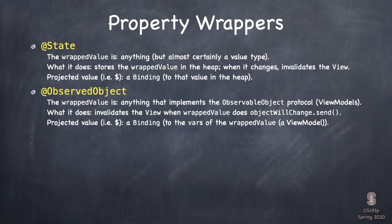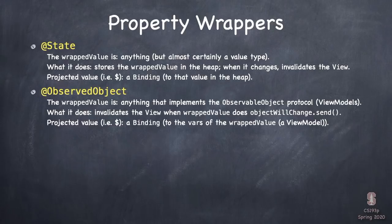@ObservedObject: the wrappedValue is anything that implements the ObservableObject protocol — ViewModels basically. It invalidates the view whenever the ViewModel does objectWillChange.send, causing the view to redraw. Its projectedValue is also a binding — a binding to the vars of the ViewModel. So you can bind a variable in your view to a variable in the ViewModel so that if either changes, the other one gets updated.